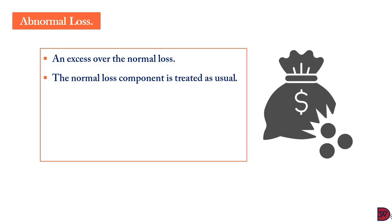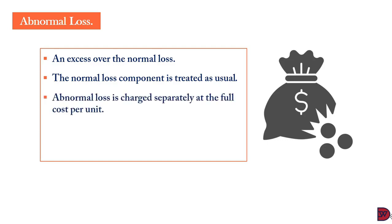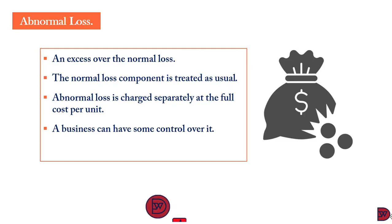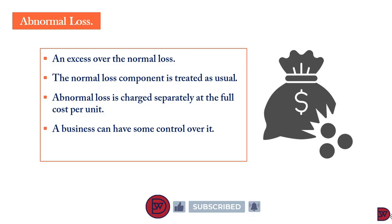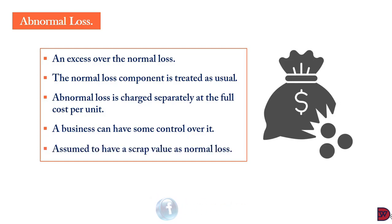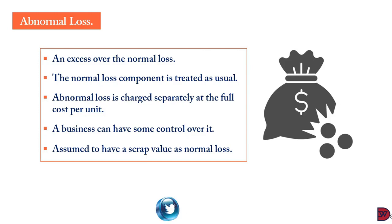The normal loss component is treated as usual — it is deducted from the cost of the process, the resulting figure is divided by the resulting units to arrive at the cost per unit. The abnormal loss components are then charged separately at the cost per unit. A business can somewhat control the arrival of abnormal loss; causes include staff negligence, machine breakdown preventable by routine maintenance, or replacing machinery. We assume that abnormal loss has the same scrap value as normal loss.